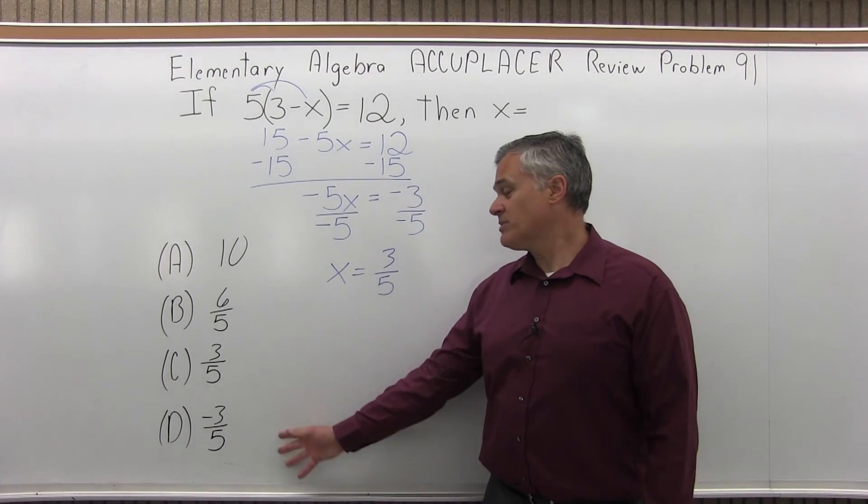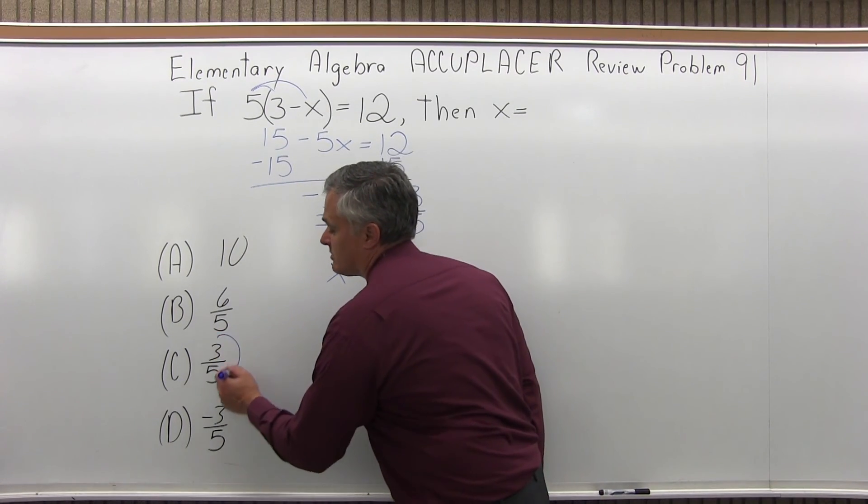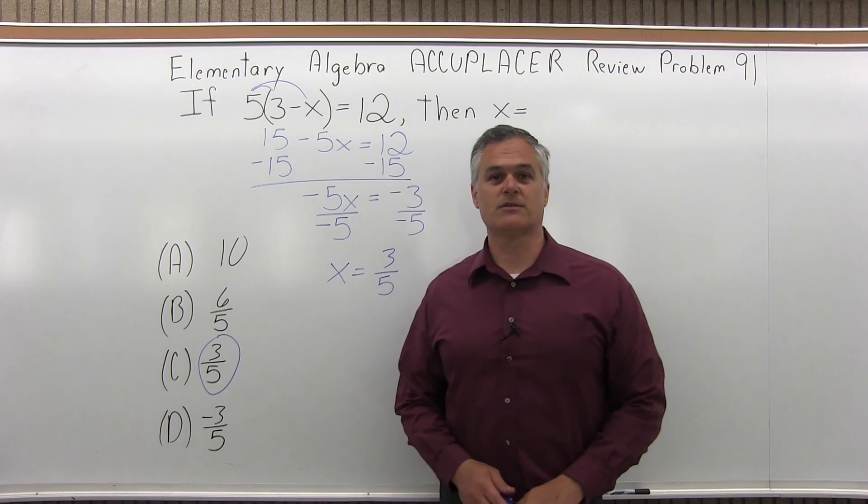Now, as I look at my list of options, option C is exactly 3 fifths. So I have a perfect match. So the answer to this problem is option C for 3 fifths.